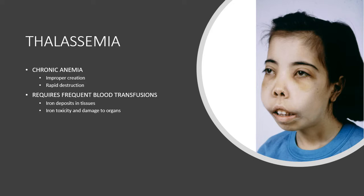Thalassemia is a chronic anemia that is congenital and genetic, though it can also occur from a spontaneous mutation. With thalassemia, the body cannot make mature hemoglobin, leading to chronic anemia. Thalassemia minor, or beta thalassemia trait, is inherited from one parent and causes minor signs and symptoms. Thalassemia major, also called Cooley's anemia, is inherited from both parents and causes progressive, severe anemia evident by about six months of age.